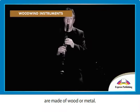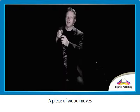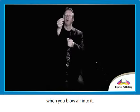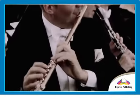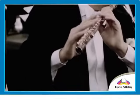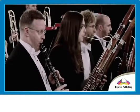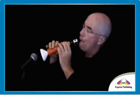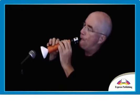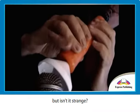Woodwind instruments are made of wood or metal. You also blow air into these instruments to make sounds. A piece of wood moves inside the instrument when you blow air into it. You can move the keys at the top to change the sound. The flute and the clarinet are woodwind instruments. Look at this man — he's got a clarinet made from a carrot. It sounds great, but isn't it strange?